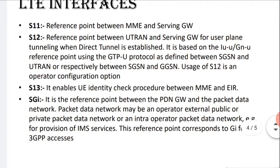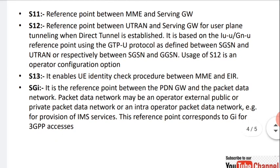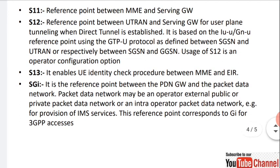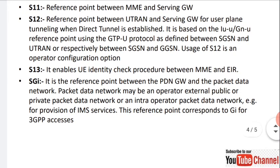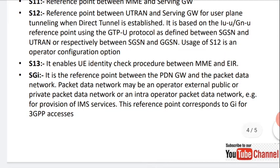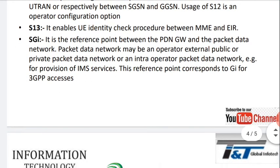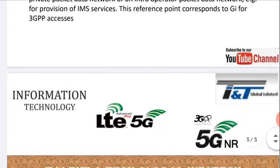S13 enables the UE identity check procedure between the MME and the EIR. The last one is SGi — it is the reference point between the PDN Gateway and the packet data network. The packet data network may be an operator external public or private packet data network, or an internal operator packet data network, for example for provision of IMS services. This reference point corresponds to the Gi reference point for 3GPP access.